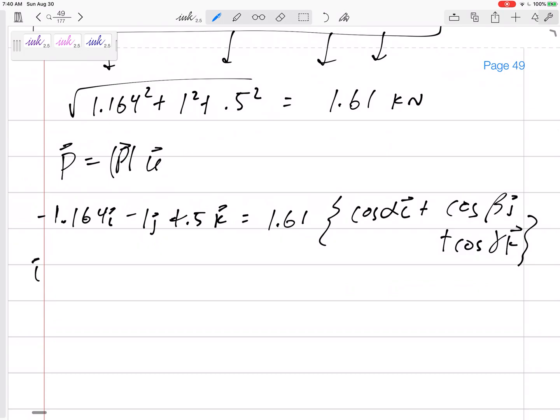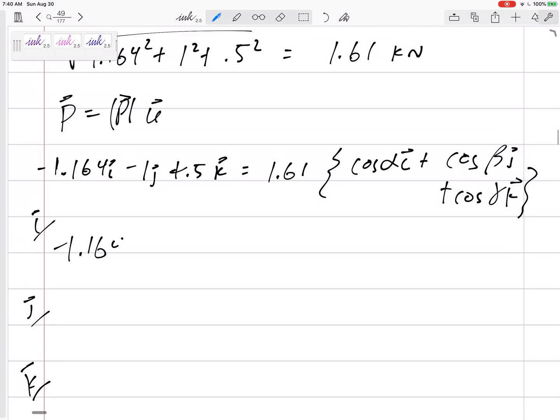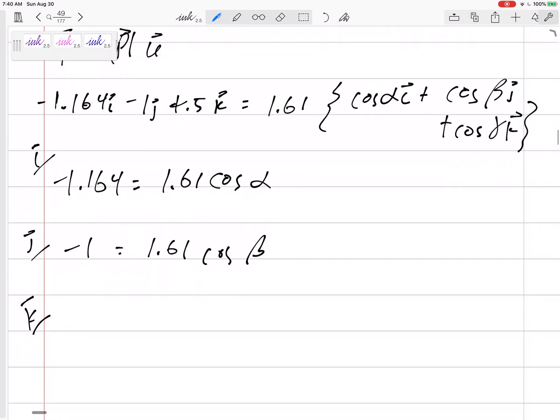All right, so the I, the J, the K. Negative 1.164 equals 1.61 cosine alpha. Negative 1 equals 1.61 cosine beta. Remember all this that we did a lot? 1.61 cosine gamma. Solve for alpha, beta, gamma.